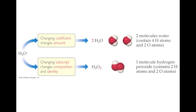It's important to distinguish between a stoichiometric coefficient and a subscript. The coefficient 2 in front of H₂O denotes two water molecules, whereas placing the 2 as a subscript gives H₂O₂ — a completely different substance, hydrogen peroxide. Water has a 2-to-1 ratio of hydrogen to oxygen, while hydrogen peroxide has a 1-to-1 ratio. They are completely different substances.